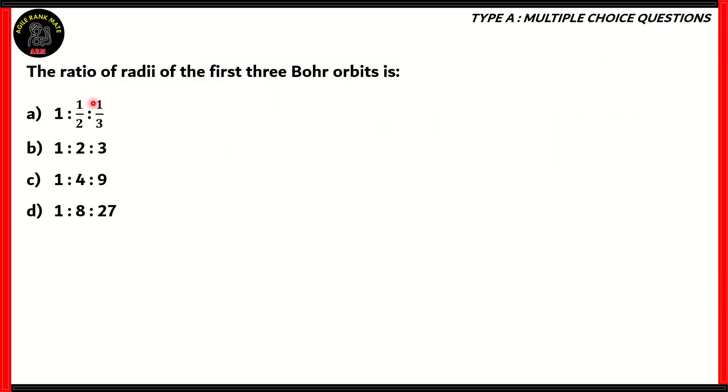Here's our first question. The ratio of radii of the first three Bohr orbits is: 1 is to 1/2 is to 1/3, 1 is to 2 is to 3, 1 is to 4 is to 9, or 1 is to 8 is to 27. So, how are we going to solve this question? Well, we're asked to find the ratio of the radii of the first three Bohr orbits. So, how do we calculate the radius of an nth Bohr orbit?